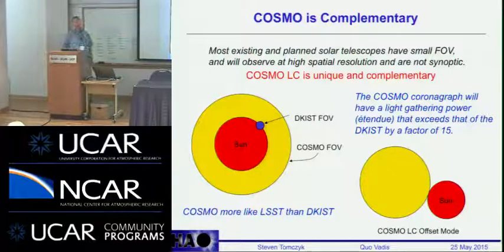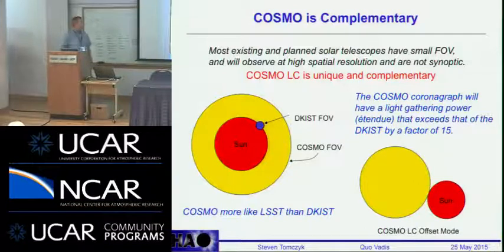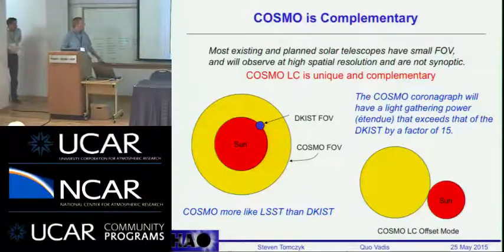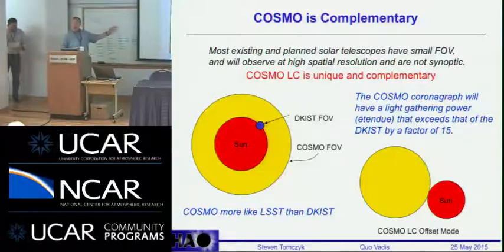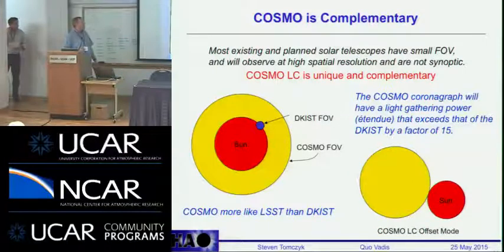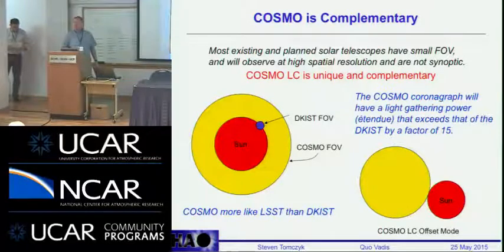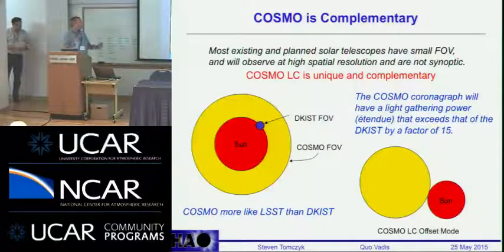How is COSMO different from DKIST, which will also measure the Zeeman effect? DKIST has a small field of view that cannot be extended very far above the limb. This shows COSMO versus DKIST field of view — COSMO is very complementary. DKIST is going to be used to observe many other things depending on the investigator, whereas COSMO is dedicated and synoptic, with an enormously larger field of view. I think of COSMO more like LSST rather than DKIST — we're trying to get this large-scale synoptic view of the sun.